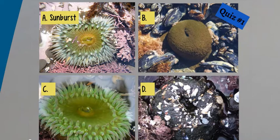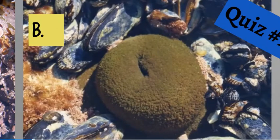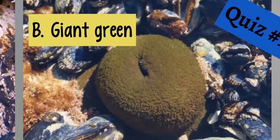Let's look at B. Now this anemone is closed. It has the avocado-like texture. As you can see, it also has a flaring base. What anemone is it? You got it — it's the giant green anemone.